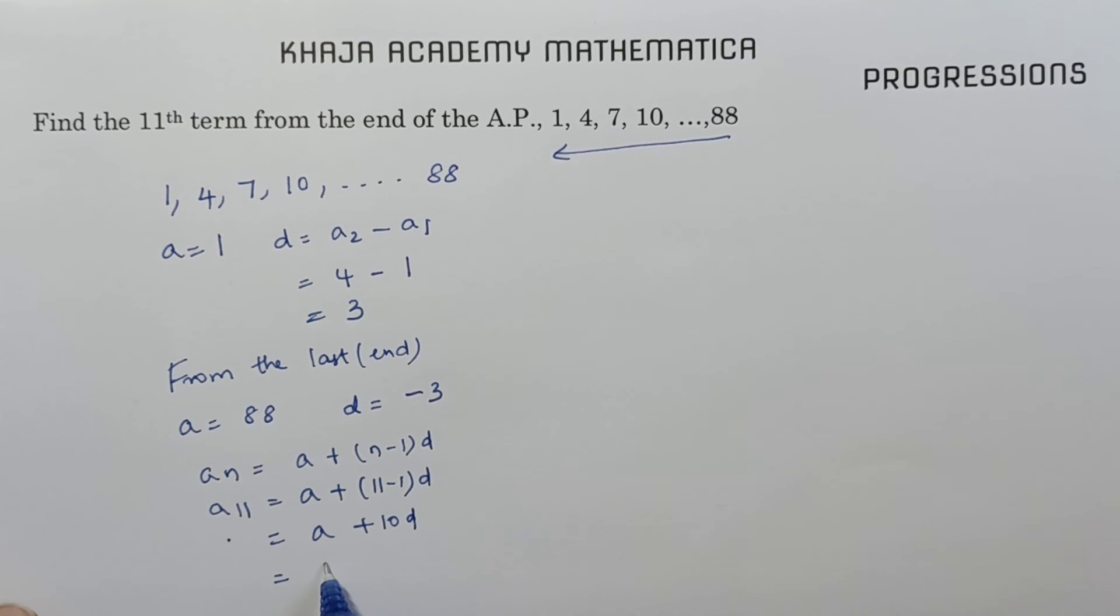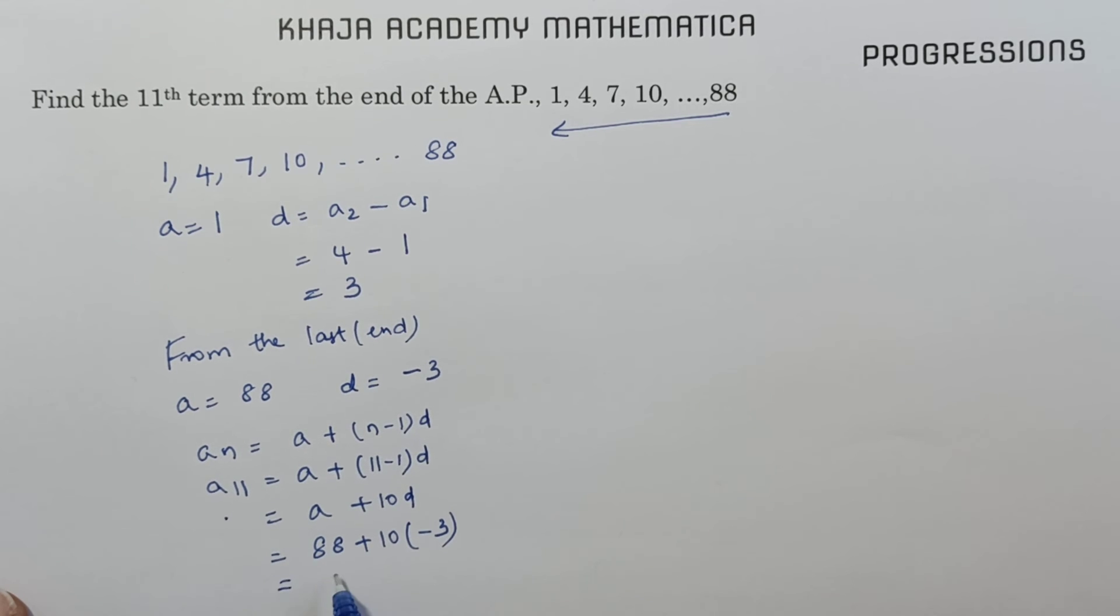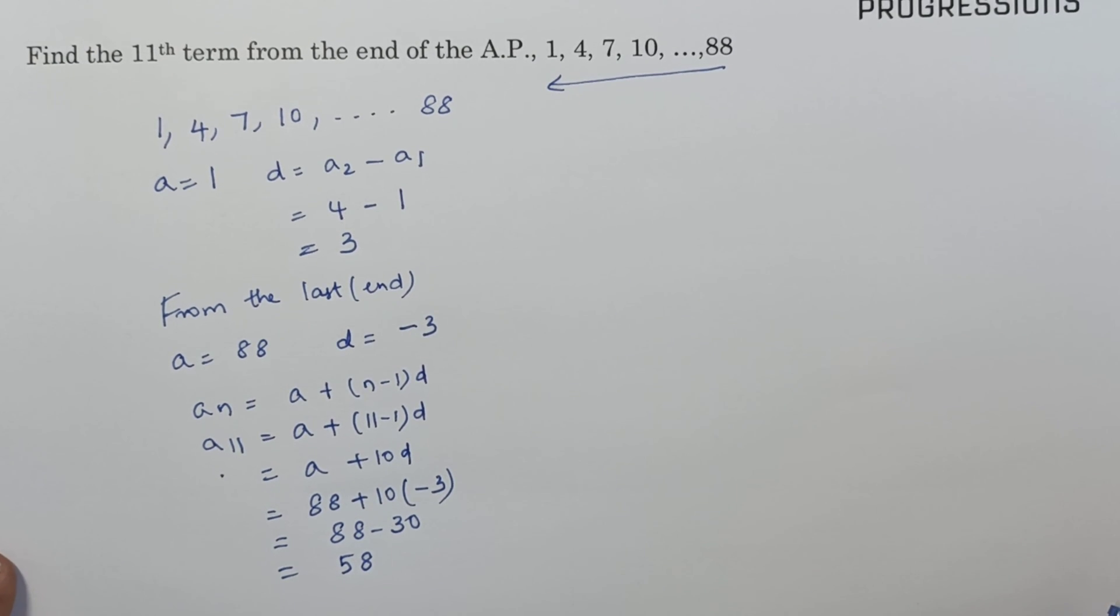The A value is 88 plus 10 times minus 3. So 88 minus 30, that is 58. So the 11th term from the end is 58.